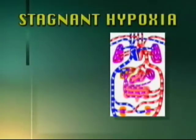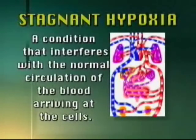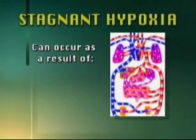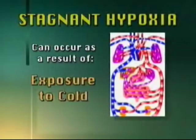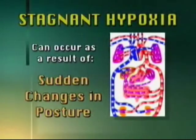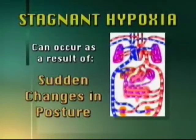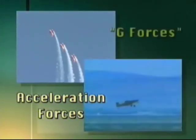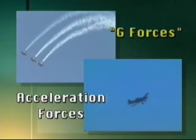Stagnant hypoxia occurs at the circulatory level. It is defined as a condition that interferes with the normal circulation of the blood arriving at the cells. Stagnant hypoxia can occur as a result of cardiac arrest, shock, exposure to cold, and sudden changes in posture, such as standing up after a prolonged rest. Aerobatic and agricultural flying expose pilots to acceleration forces, commonly called G-forces, that can result in this type of hypoxia at the brain level.